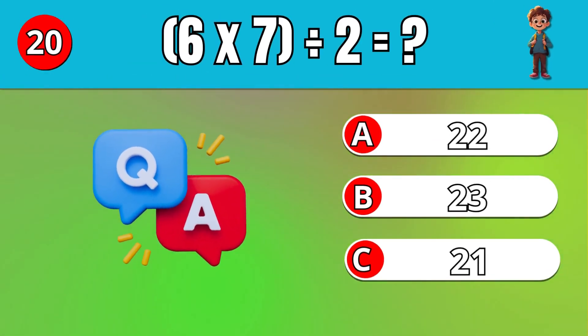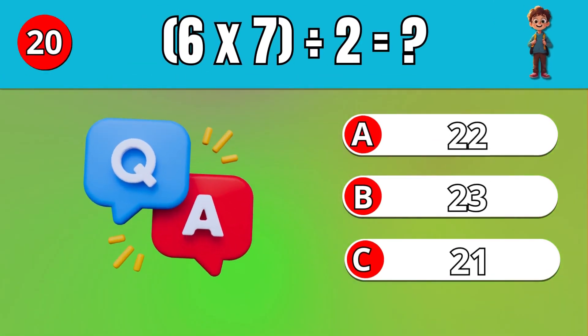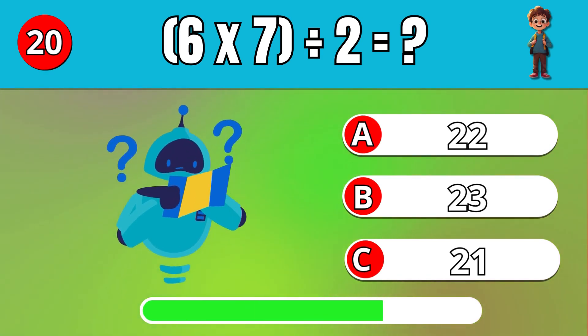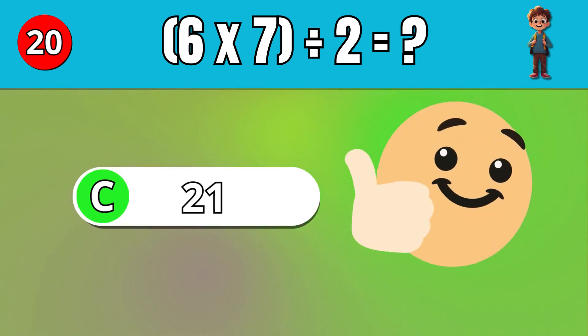Multiply 6 by 7, then divide by 2. C, 21.